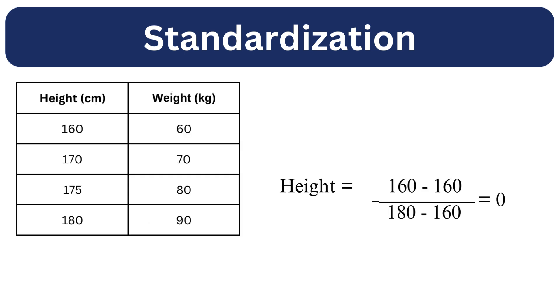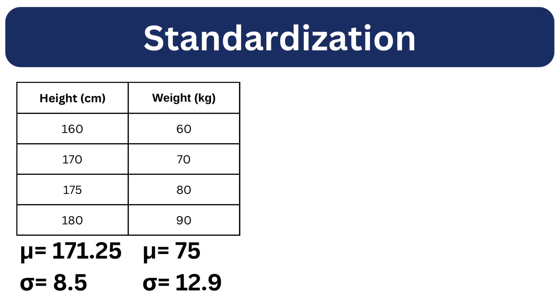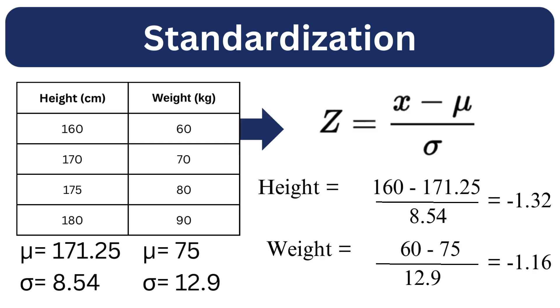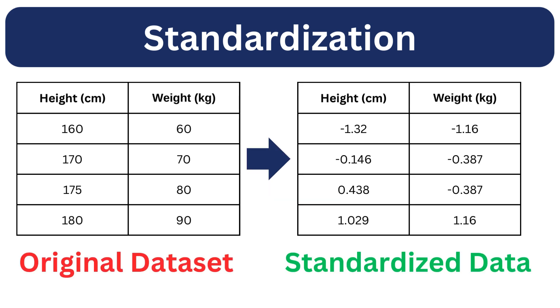Let's take the same dataset of height and weight. We will standardize it by calculating the mean and standard deviation. After calculating the mean and standard deviation of both features, we can use the z-score formula to standardize the data. We can see that the data has been transformed such that the mean is 0 and the standard deviation is 1.